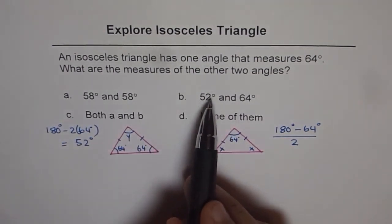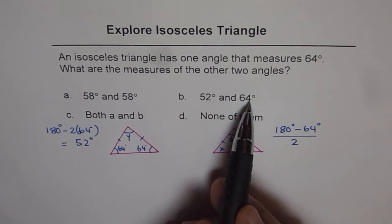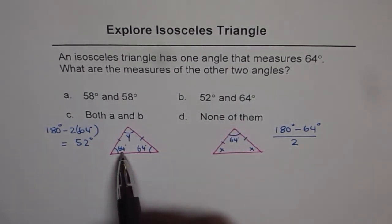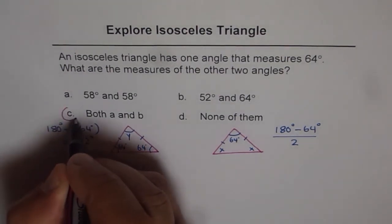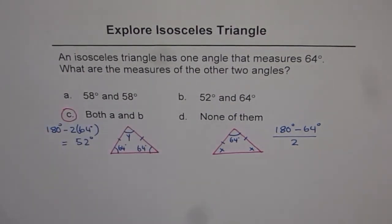That one of the angles is 52 degrees, the other one is 64. Because one angle is given to us. And therefore, we get the answer which is both A and B. Do you see that? So that is how this question can be solved. I hope you appreciate it. Thank you.